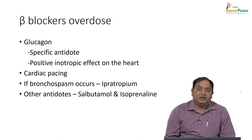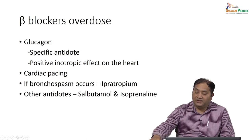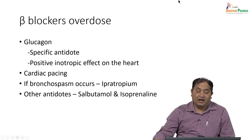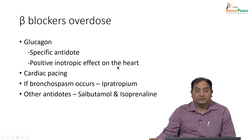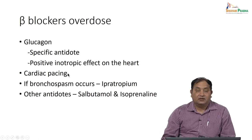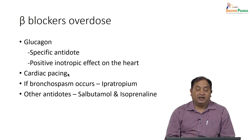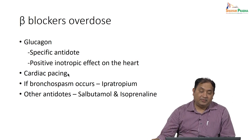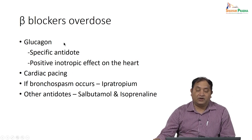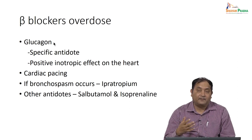In beta blocker overdose, management is important: the specific antidote is glucagon, which has a positive inotropic effect on the heart. Depending on severity, cardiac pacing may be needed. For bronchospasm, ipratropium can be started; for severe bronchospasm, salbutamol or isoprenaline can be used. So treatment options in beta blocker overdose are glucagon as specific antidote, cardiac pacing if needed, and bronchospasm management with ipratropium, salbutamol, or isoprenaline.